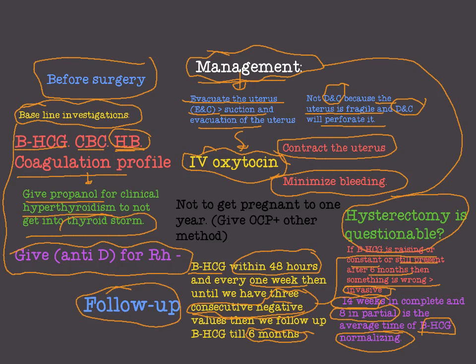Regarding fertility after molar pregnancy, the woman should not get pregnant for one year. To achieve this, we give oral contraceptive pills — we do not use an IUCD, as it is not appropriate in this condition. We give oral contraceptive pills so we can follow up the patient without any pregnancy, plus other methods of contraception such as condoms.